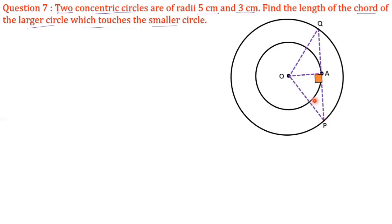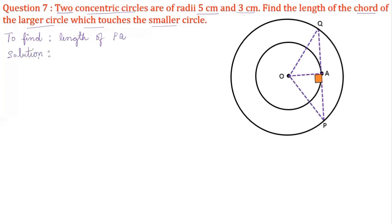Angle OAP and angle OAQ are each equal to 90 degrees, because the radius is perpendicular to the tangent at the point of contact. Here A is the point of contact, so OA is perpendicular to QP. Therefore angle OAP and angle OAQ are equal to 90 degrees. Now we have to find the length of PQ — OA is perpendicular to PQ because the tangent is perpendicular to the radius at the point of contact.